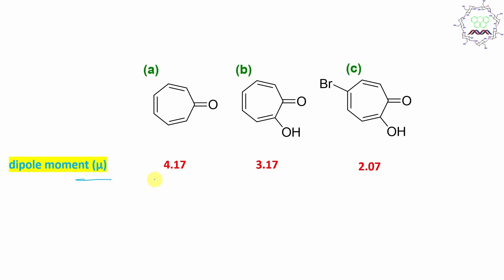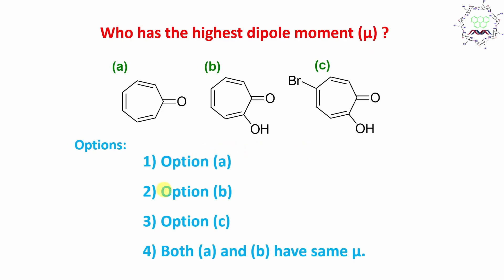So you can see this is the dipole moment. This value is 4.18 Debye, this is 3.17 Debye, and this is 2.07 Debye. From these three values you can see maximum dipole moment is this one, second is this one, third is this one. So I guess you got the answer. Option A has highest dipole moment. By the way, if it is asked what is the order of the dipole moment, that time also student you can answer. Obviously option A greater than B greater than C.